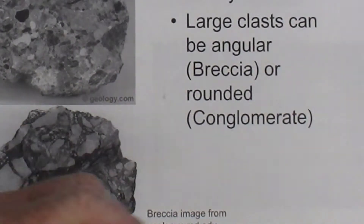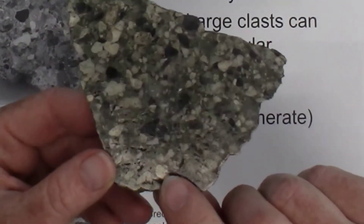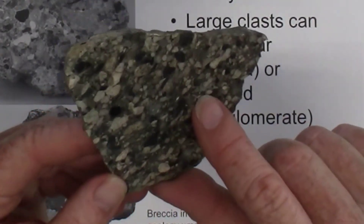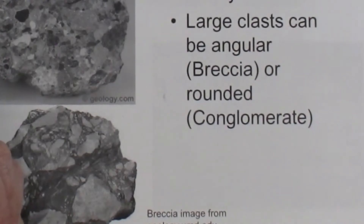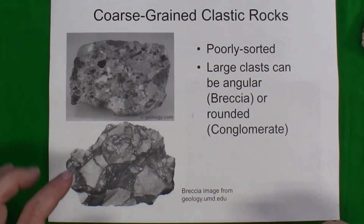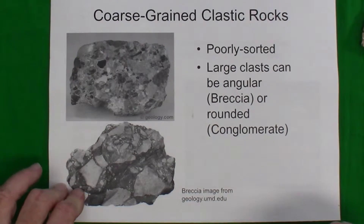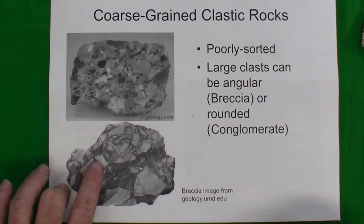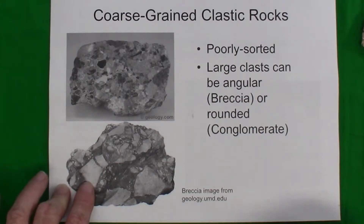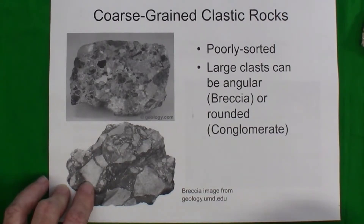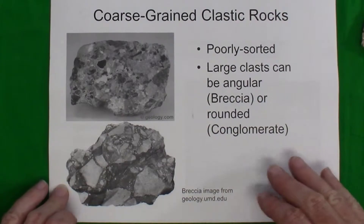Here's another example of conglomerate with rounded pebbles. A breccia, by contrast, is a poorly sorted, large-grain clastic rock where the clasts have a significant number of sharp edges and corners. This indicates the sediment was not transported very far before being deposited, buried, and lithified into a clastic rock.